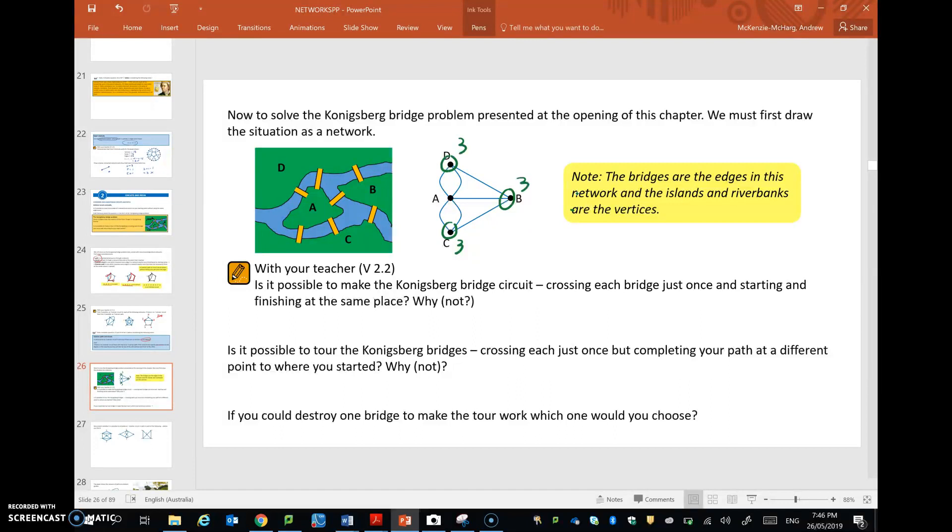Okay, so is it possible to make this circuit? No, there are three odd vertices, so an Eulerian circuit and or path is not possible.